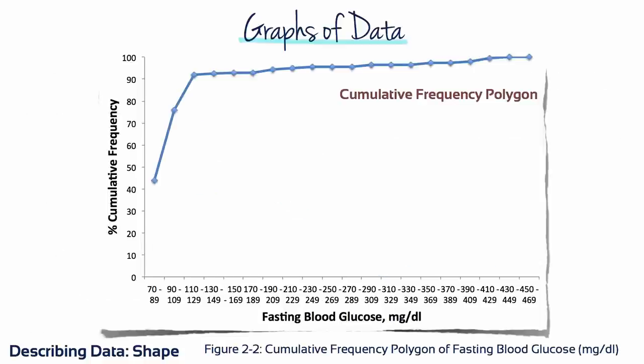A dot and line graph can also be used to summarize cumulative percents. This type of graph, called a cumulative frequency polygon, is used for continuous data.